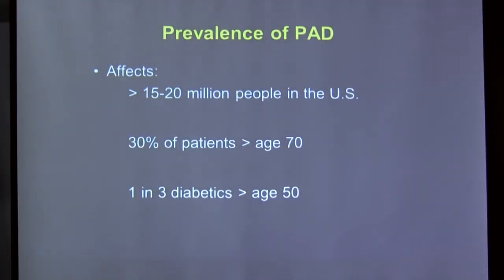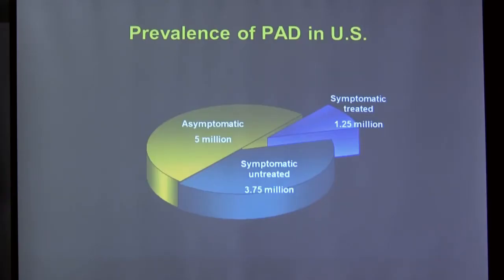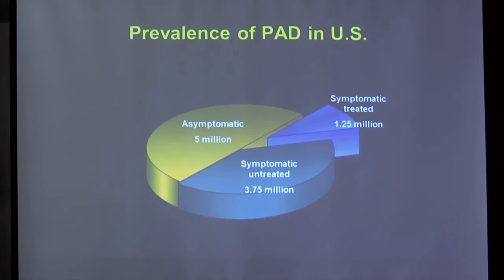PAD affects about 20 million people in the U.S. It is primarily a disease of those over 50, and increasingly common as people live longer. About one in three diabetics over age 50 has some degree of PAD. Many patients are asymptomatic — their disease is mainly a marker for cardiovascular risk — and should be on antiplatelet therapy such as aspirin and cholesterol-lowering medications. Others are symptomatic but untreated, often because the disease is under-recognized or diagnosed late.